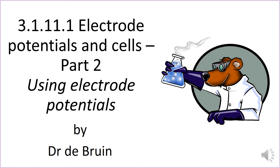This video is the second one in a series about electrode potentials and cells for A-level chemistry. In the first video we looked at how you make an electrochemical cell, what the conventional representation is for writing them down, and what some of the rules for that are, and also the standard hydrogen electrode. In this video we're going to look at what you can actually use these standard potentials for, doing some calculations, and working out potential differences for cells.